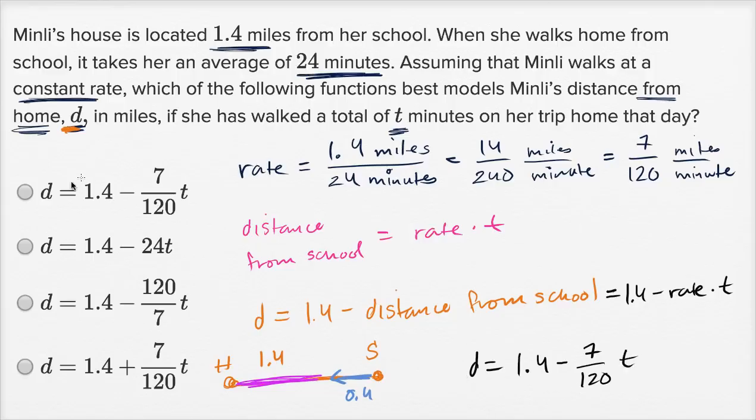And if we look at the choices, that's going to be this first choice over here. And let's look at the other choices and think about how could we have ruled them out fairly quickly. Well, this one has 1.4, the distance between the two places, minus 24t. Well, this isn't the rate right over here. That's how long it takes her to walk. It's not the rate. So, you could rule that one out. This one is 1.4 minus the reciprocal of the rate. So, that's a strange answer.